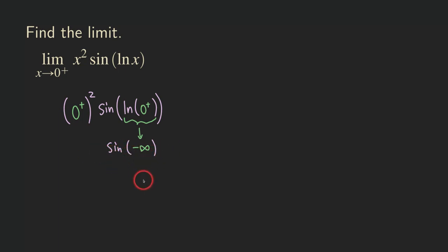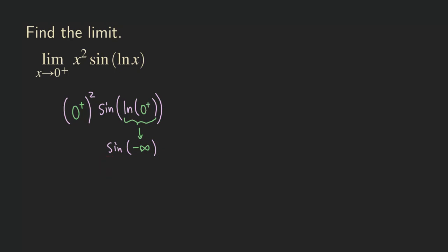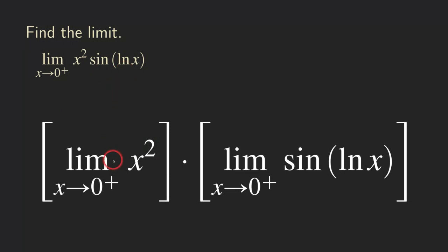So the limit of the sine part does not exist. That means we cannot say the limit is zero just because we have a very small number times something — zero times anything is zero does not apply here. Because this inner limit does not exist, we cannot use the limit law to break the product into separate limits.